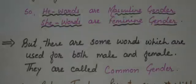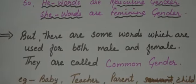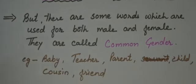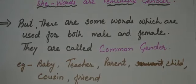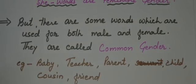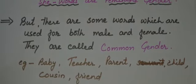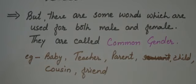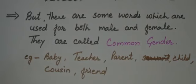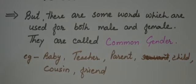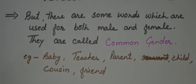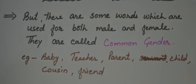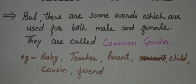There is a third gender also. There are some words which are used for both male and female, for both boys and girls. They are called common gender. For example, 'baby' — a baby can be a boy or a girl, but it is called a baby, so it is common gender. 'Teacher' can be male or female but is called teacher. 'Parent' — both mother and father are parents, so parent is common gender. 'Child' can be a boy or girl. 'Cousin' can be a brother or sister. 'Friend' is also common gender because a friend can be a boy or girl.